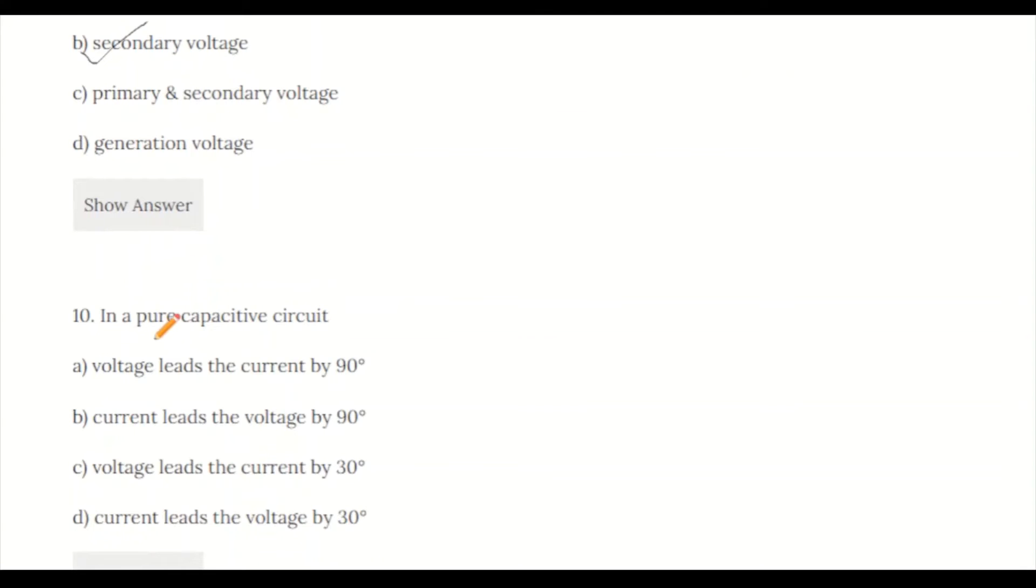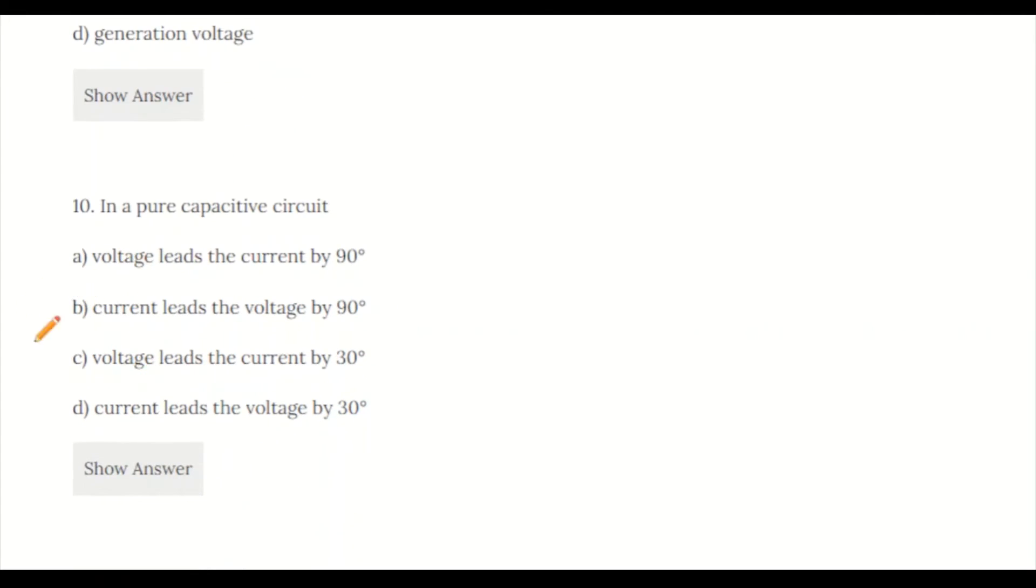Question 10: In a pure capacitive circuit: a) voltage leads the current by 90 degree, b) current leads the voltage by 90 degree, c) voltage leads the current by 30 degree, d) current leads the voltage by 30 degree. We have the formula CIVIL, so the correct answer is current leads voltage by 90 degree, option B.